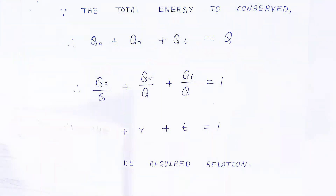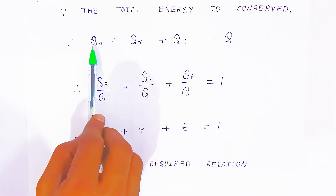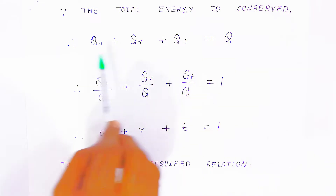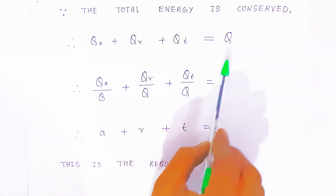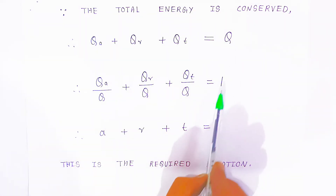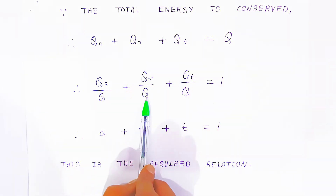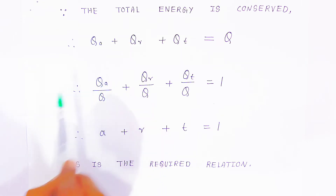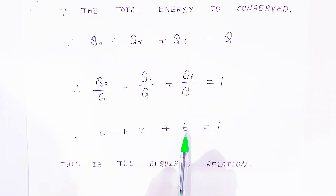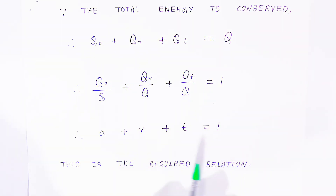Now, the total energy is considered as Q. Because some quantity of heat is absorbed, some is reflected, and some is transmitted — so QA plus QR plus QT equals Q. Dividing this equation by Q, we get QA/Q plus QR/Q plus QT/Q equals 1. From the definitions, QA/Q is the coefficient of absorption, QR/Q is the coefficient of reflection, and QT/Q is the coefficient of transmission. Therefore, coefficient of absorption plus coefficient of reflection plus coefficient of transmission equals 1. This is a very important equation representing the required relation.